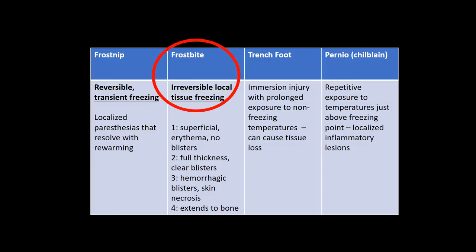Having covered drowning, scuba diving, and high-altitude disorders, we now move to disorders related to snow. There are four main ones: frostnip, frostbite, trench foot, and pernio.